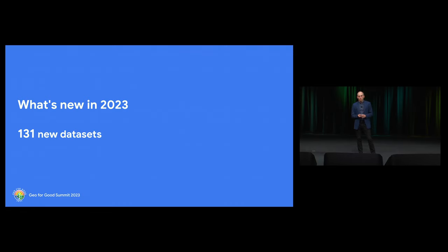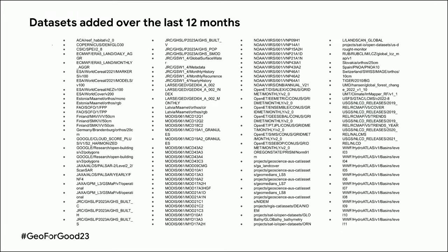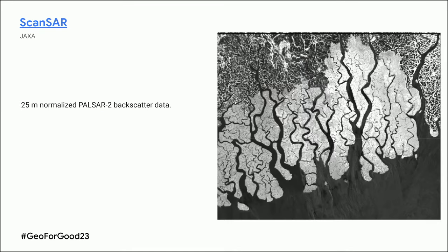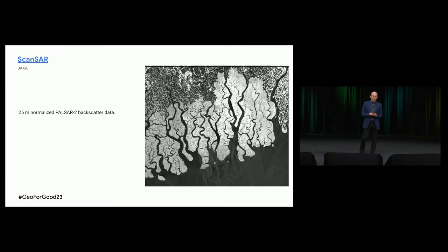Now, the fun part: we have 131 new datasets ingested over the last 12 months. I'm going to talk about the highlights. HLS is the top ingested dataset — it's almost ready and should be available pretty soon, at least the L30 part. Rather than discussing algorithm theoretical basis, I tried to find something new and interesting in each dataset — things I didn't know about — and ended up learning a few more things about what's happening on our planet.